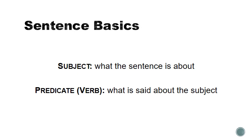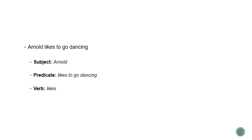Another way to think about it: the subject is what the sentence is about, and the predicate is what is said about the subject — what is predicated about the subject. For example: 'Arnold likes to go dancing.' The subject is Arnold — that's who we're talking about. What we're saying about Arnold is that he likes to go dancing. That's the predicate, and the verb here is just 'likes.'